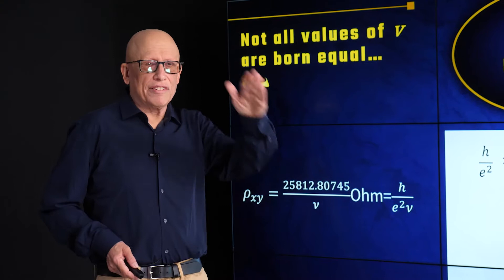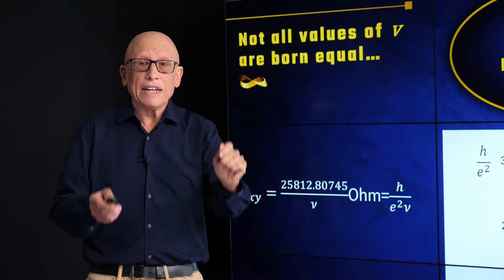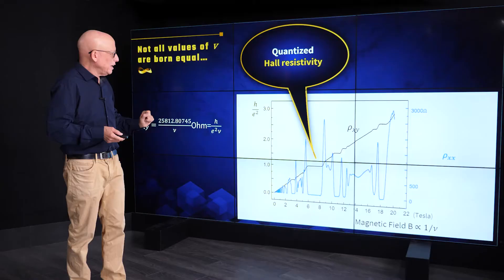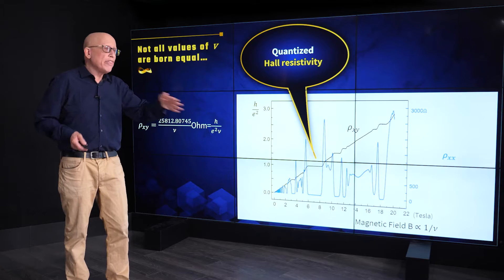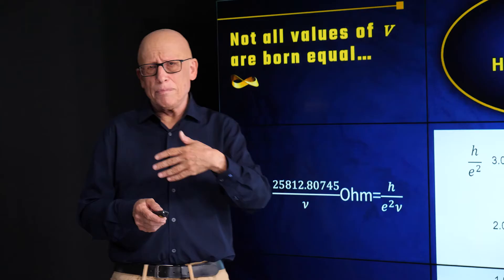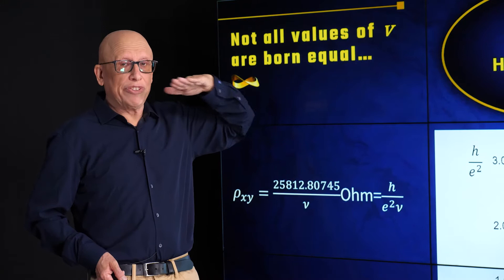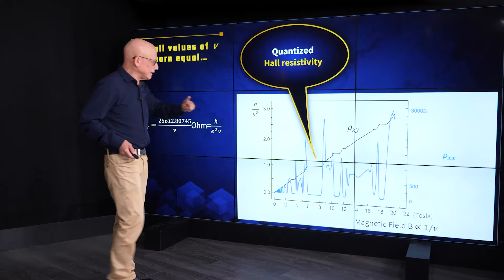Now, we expected a straight line and we got steps. You don't get a Nobel Prize for that. You get a Nobel Prize for what these steps are. And let me dwell on that. The starting point of each step and the ending point of each step depend on sample, depends on material, depends on many parameters.